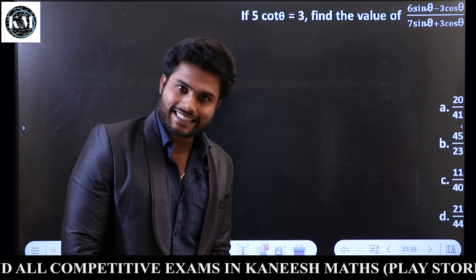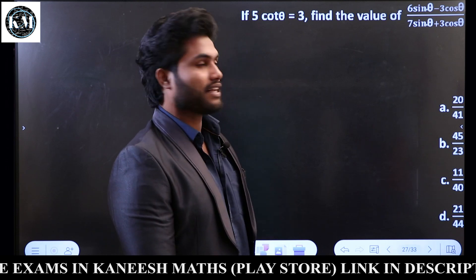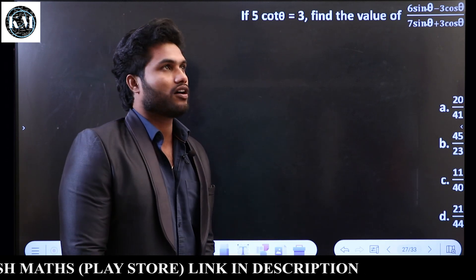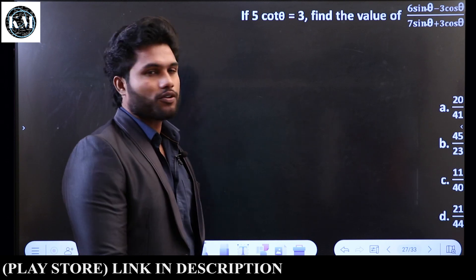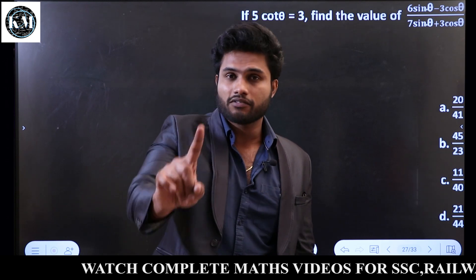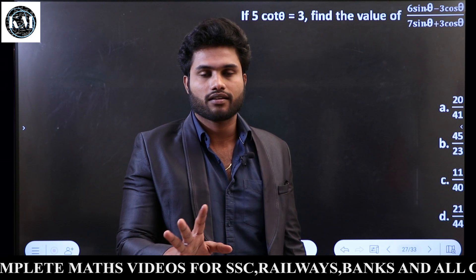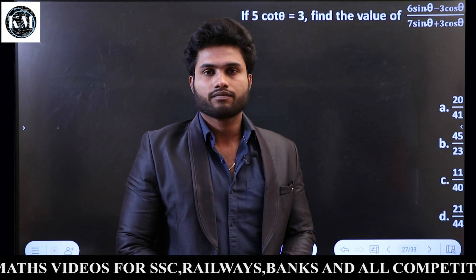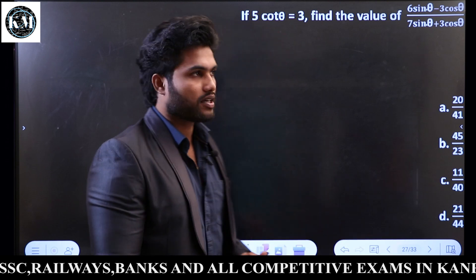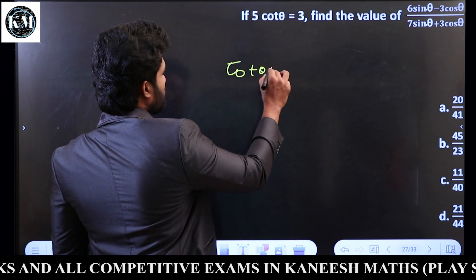Find the value of (6 sin θ minus 3 cos θ) divided by (7 sin θ plus 3 cos θ). How do we solve this? Cot θ is cos by sin. Given 5 cos θ = 3, cot θ is 3 by 5.